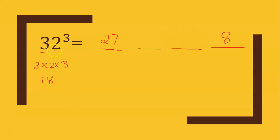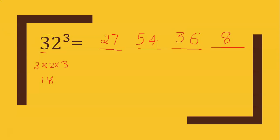Now we have 18 to add. This is our square. Next is 18 into 3, then 18 into 2. Next is 8, then 6, then 3. We add it.